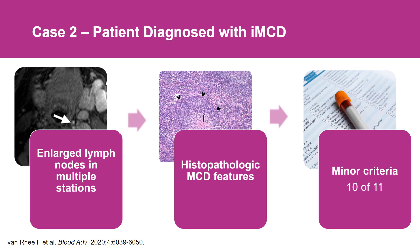The lymph node biopsy came back consistent with idiopathic multicentric Castleman disease — it was particularly vascularized and could sometimes be described as the hypervascular histopathological subtype. Bringing everything together: the patient has multiple regions of enlarged lymph nodes meeting the first major criterion, histopathological features consistent with multicentric Castleman disease, and HHV8 testing is negative — so both major criteria are achieved for idiopathic multicentric Castleman disease.